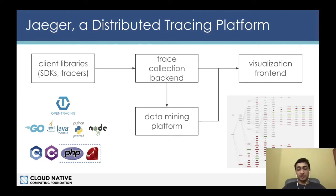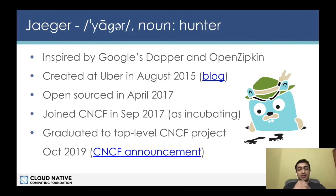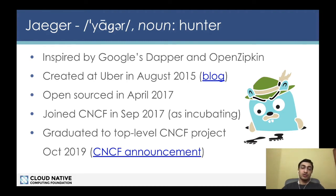One important point is that Jaeger does not provide instrumentation. Jaeger provides an SDK but not the instrumentation API — for that we can use something like OpenTracing or OpenTelemetry. A little history: Jaeger was inspired by Google's Dapper and OpenZipkin. It was created by Uber in August 2015 and open-sourced in April 2017. That same year Jaeger joined CNCF as an incubating project, and it graduated to a top-level CNCF project in 2019.